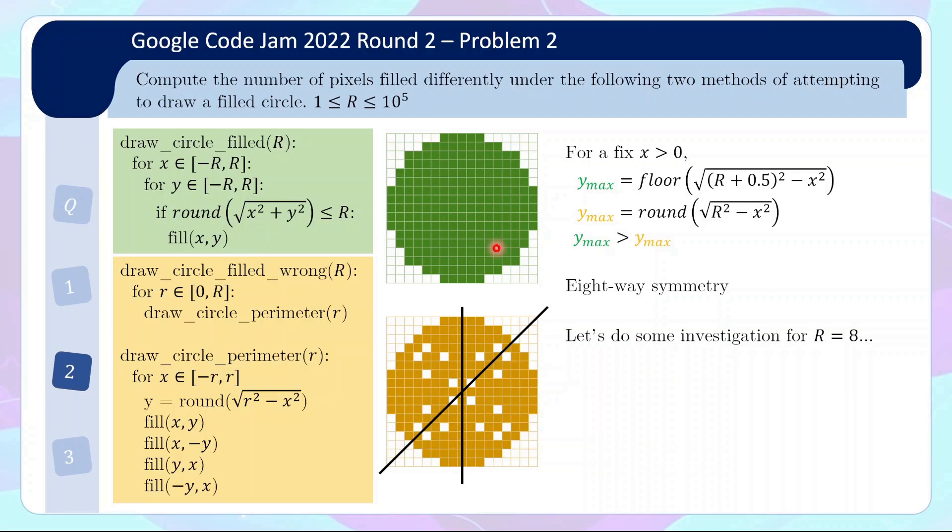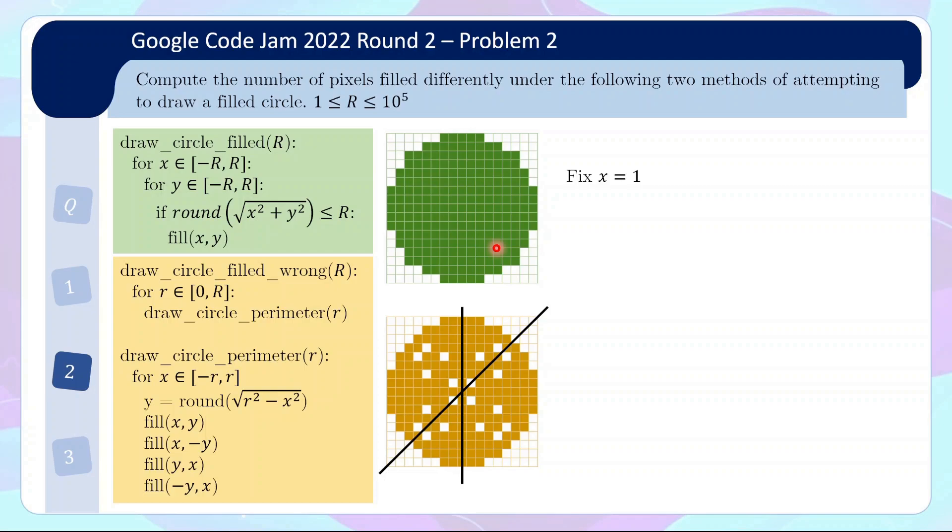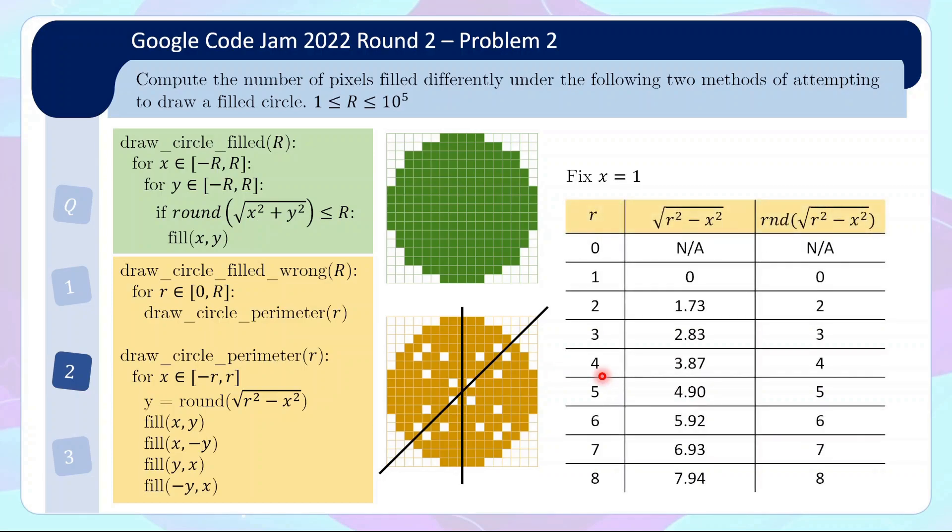Now let's do a bit of investigation for capital R equals to 8, and this will actually very naturally lead to the solution. Let's see what happens when x equals 1, and try to understand why there is a gap here under the yellow method. To do this, we calculate for each small r from 0 to 8, and see what is the rounded value of sqrt(r^2 - x^2). Well, 0 will be an imaginary number, so r equals 0 will not hit the x equals 1 column. When r equals 1, you get 0, r equals 2, you get this, 3, 4, and so on.